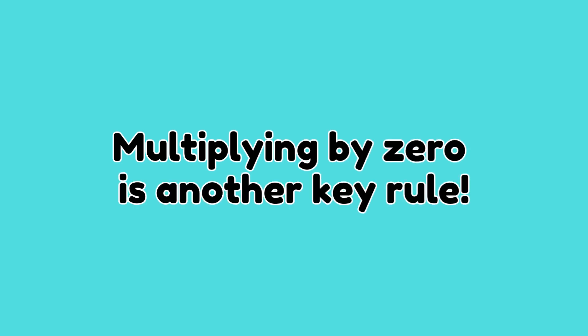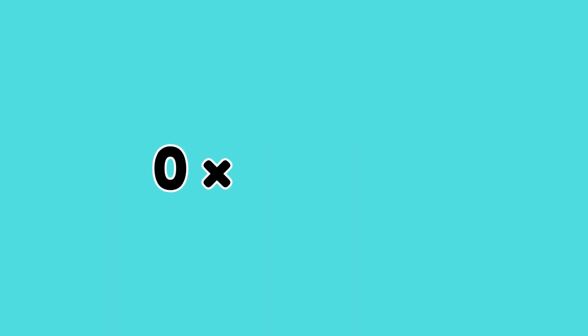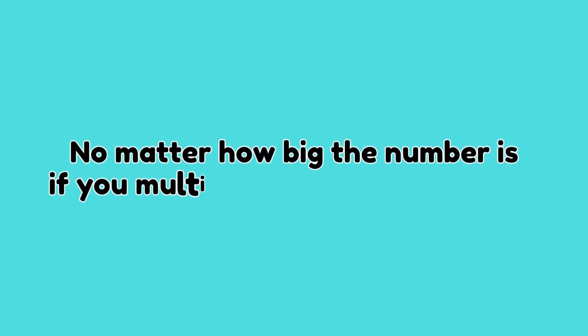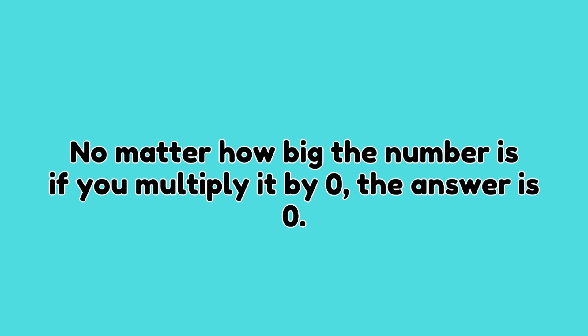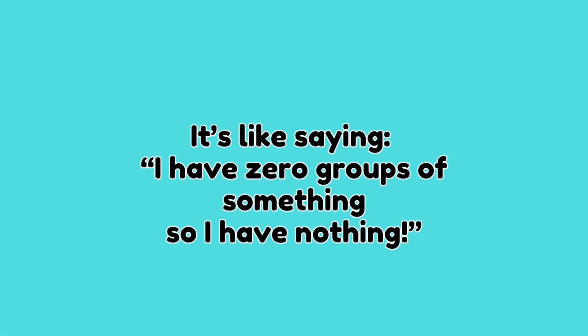Multiplying by zero is another key rule. Any number multiplied by zero is always zero. Zero times one thousand is equal to zero. No matter how big the number is, if you multiply it by zero the answer is zero. It's like saying: I have zero groups of something, so I have nothing.